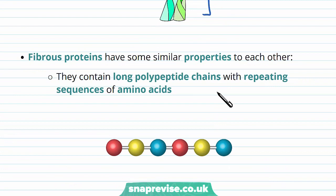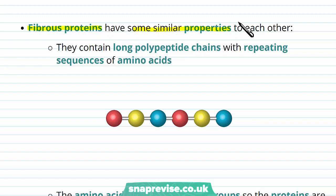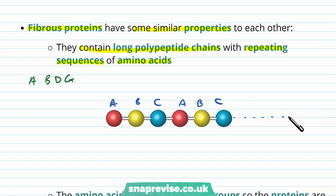The fibrous proteins found in the body have some similar properties. A lot of the time they contain very long polypeptide chains with many amino acids, but these chains have repeating sequences. With a globular protein we would see various different sequences with no repeating units. In a fibrous protein we get repeating parts of the amino acid sequence — it could be ABC followed by ABC again, and this repeating unit keeps going all the way along the chain.